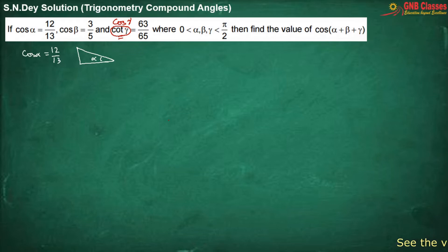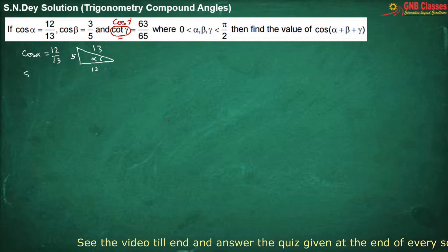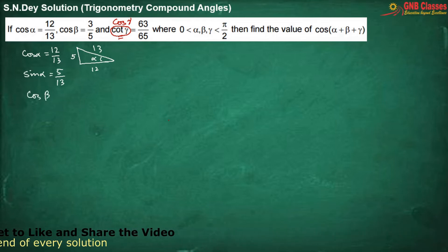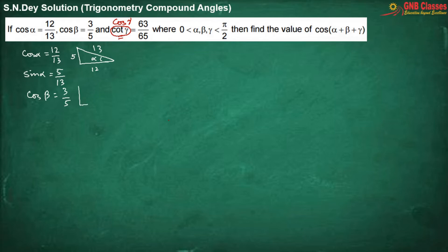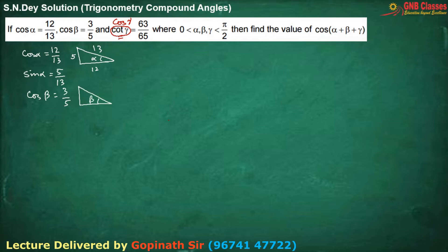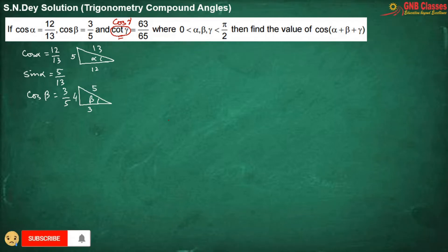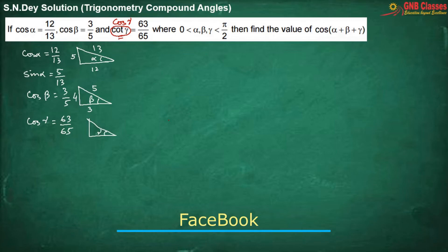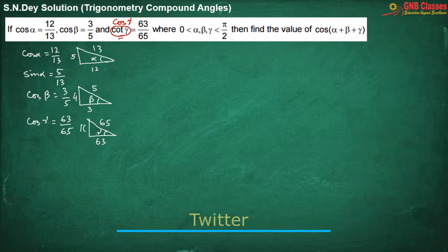Cos beta is 3 by 5. Drawing a right angle triangle with angle beta, the adjacent is 3 and hypotenuse is 5, so the opposite is 4 by Pythagoras theorem. Now we have cos gamma is 63 by 65. Drawing a right angle triangle with angle gamma, the adjacent is 63 and hypotenuse is 65, so the perpendicular will be 16.